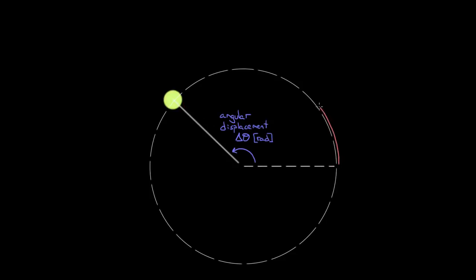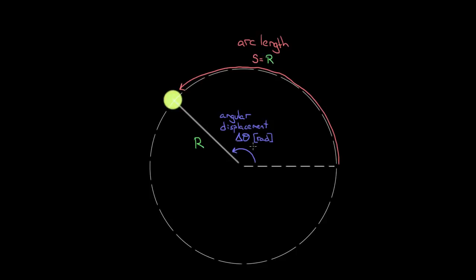The ball traced out a path through space around this circle. We call this the arc length — people vary on what letter to use, but most math books use S, so we'll use S as well. If we use radians, and this is why we use radians, it's extremely easy to find. The arc length is just the radius of the circular path the tennis ball is tracing out — the length of the string — multiplied by the angular displacement. You just take that measurement in radians, multiply by the radius, and you get the arc length: the number of meters along this path that the object has traveled.